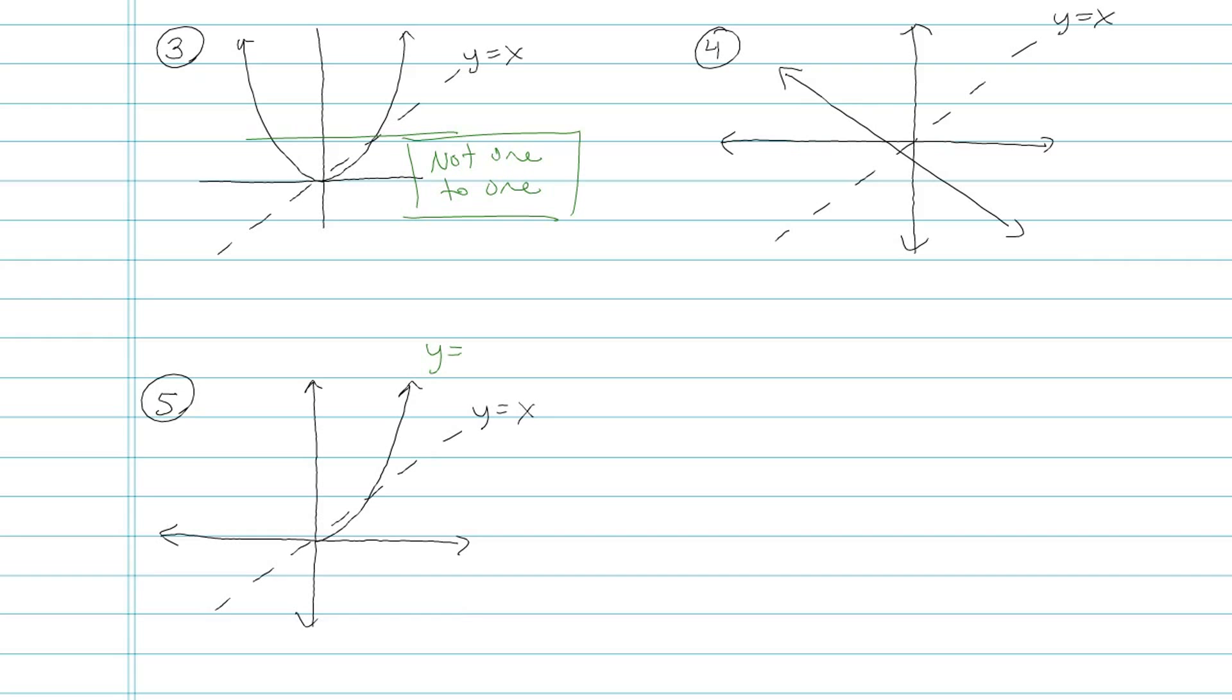In fact, this is the equation for y equals x squared, where x is greater than or equal to 0. You've probably seen that in your textbook, but you might have ignored it. Now that I only have half a parabola, now it's 1 to 1. And now I can find the inverse of it.